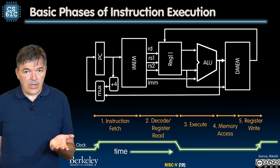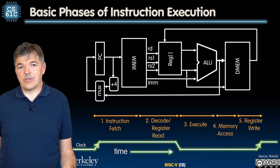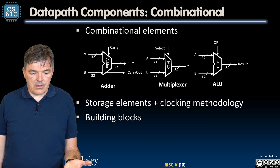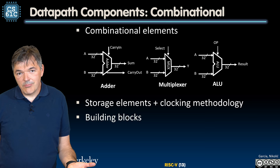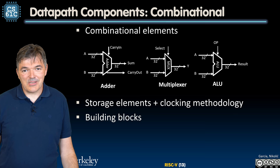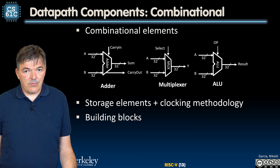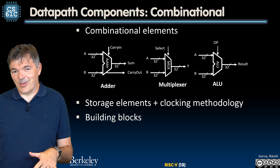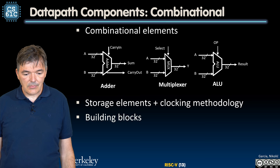So how do we build the data path? We have seen these components before — they're all familiar from the module on digital systems. The combinatorial elements we need are adders, multiplexers, and ALUs, which will be arranged like Legos — we can essentially assemble this like a Lego kit. We also need to complement them with state elements, which store data, and a clocking methodology. For now we are sticking with the simple clocking methodology that corresponds to a single-cycle CPU.